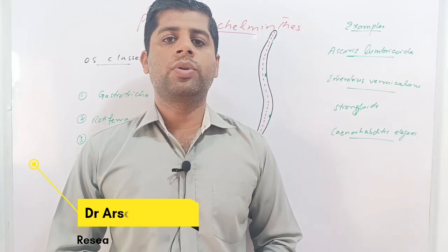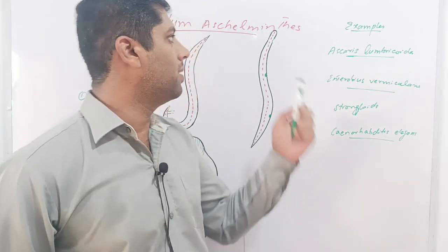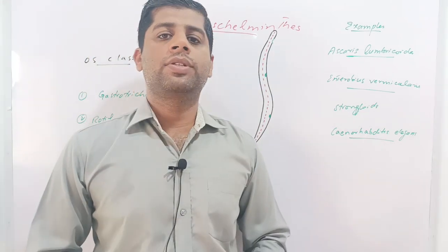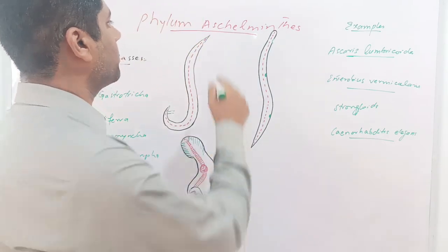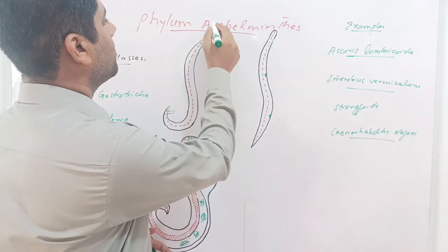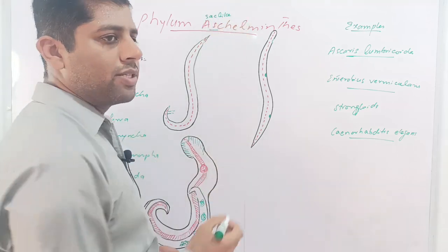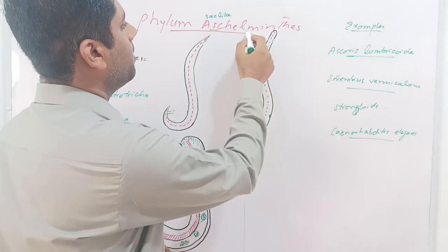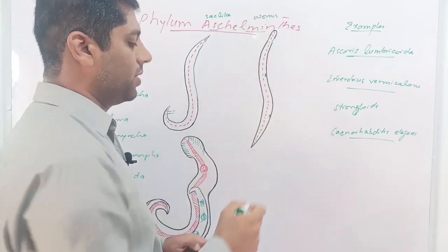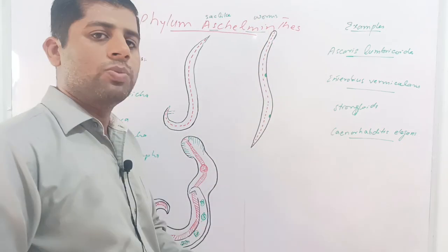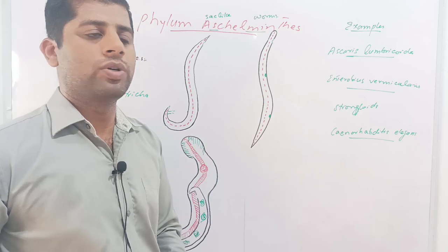Hi, I am Dr. Rastran Khan and today we are going to explain the phylum Aschelminthes. Aschelminthes is derived from Greek language and is composed of two words: 'asc' meaning sac-like, and 'helminth' meaning worms — the study of worms is called Helminthology. So basically, Aschelminthes are sac-like worms or roundworms.